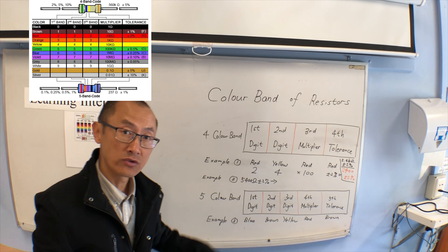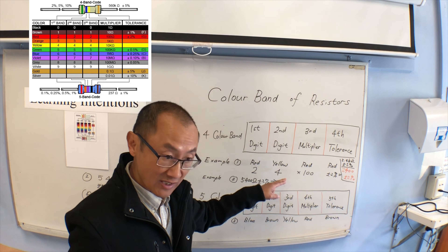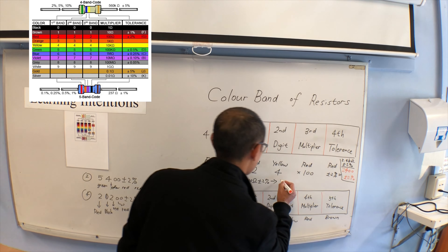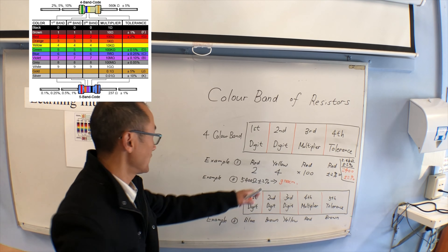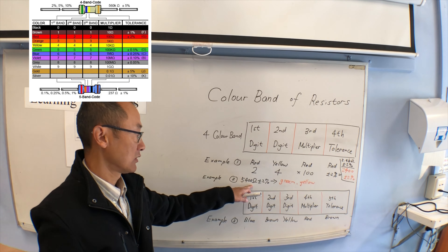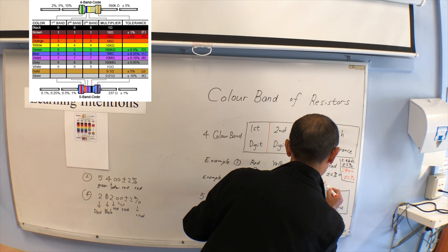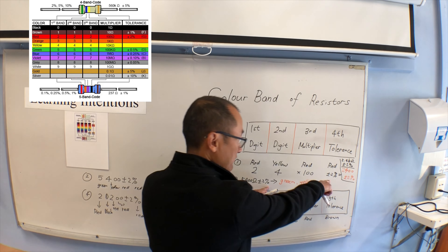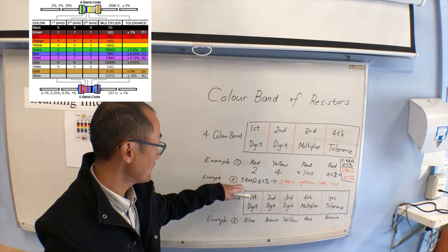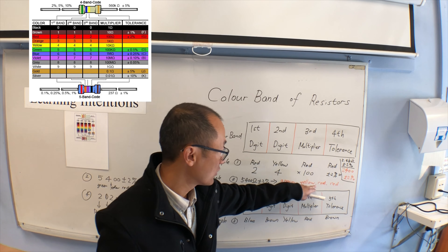For another example, if the value is five thousand four hundred ohm plus and minus two percent, you have to change it to colors. Number five is green, number four is yellow, and the double zero means the multiplier is red — times one hundred. Two percent tolerance is also red. So the color bands should be green, yellow, red, red.